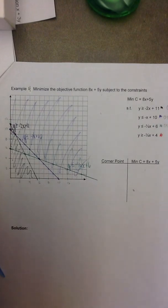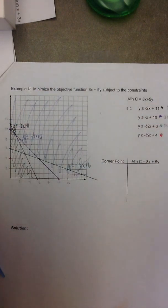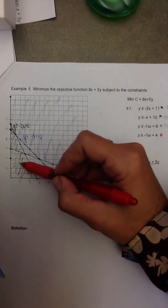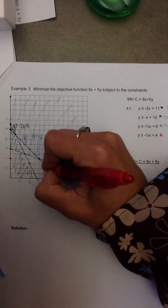But I still have one more inequality to graph. y is greater than or equal to negative 1 fourth x plus 4. So I start off with the y intercept of 4. And from there I move down one and right four. Oh, look at that. It happens again.